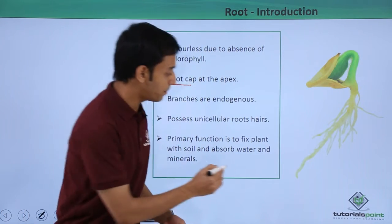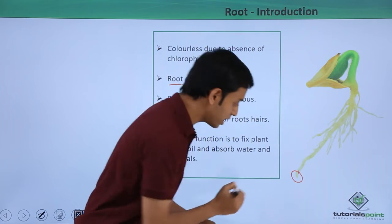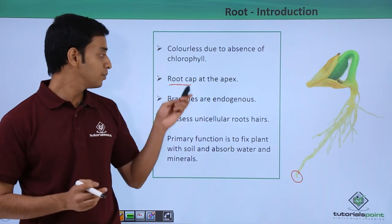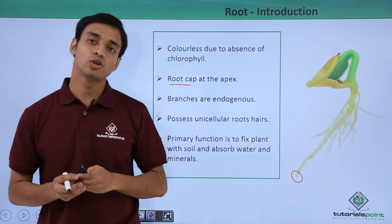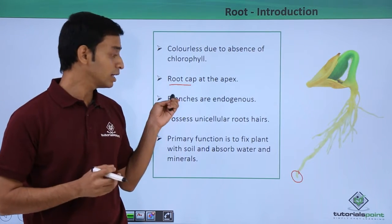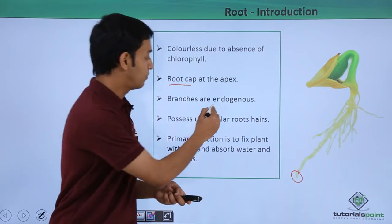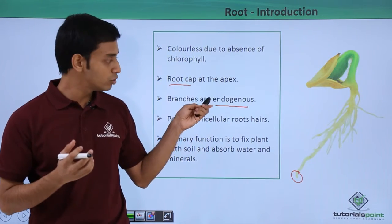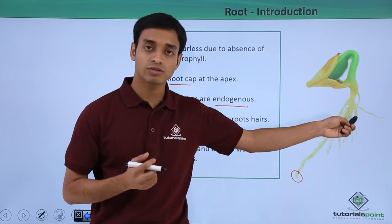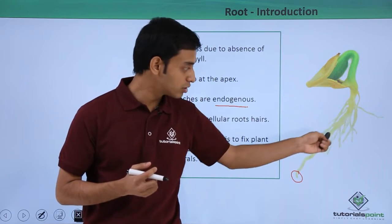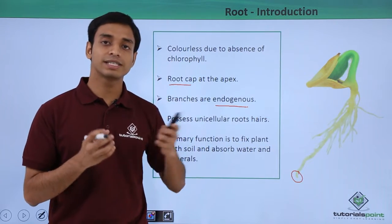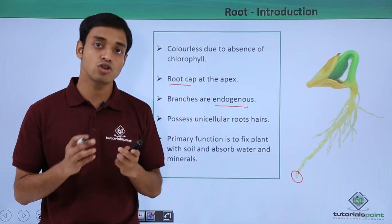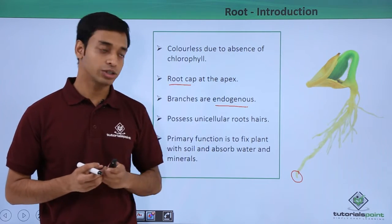The root has a root cap which is present at the apex — the tip portion. These areas are covered or protected by the root cap. The roots also have branches which are very importantly endogenous, meaning they arise from internal regions, not external.